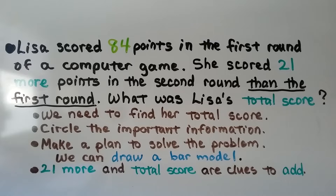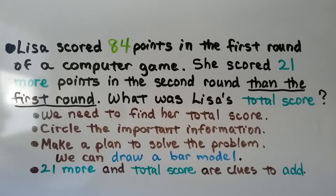Lisa scored 84 points in the first round of a computer game. She scored 21 more points in the second round than the first round. What was Lisa's total score? The first thing we need to do is ask ourselves what we are finding — we need to find her total score.